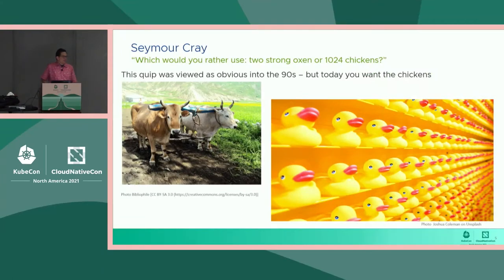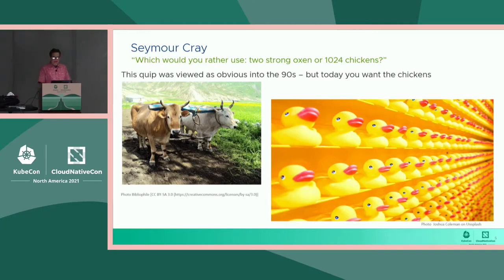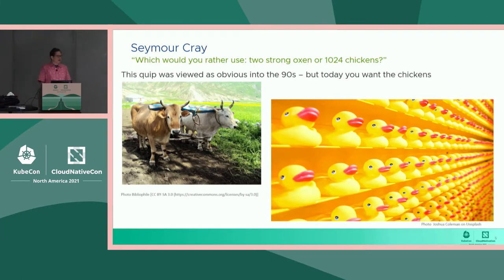Supercomputer pioneer Seymour Cray is said to have coined the marketing line: which would you rather use, a couple of strong oxen or a thousand chickens? He said this back in the 90s. Well, advancements in both hardware and software have changed the terrain, and today you want the chickens.